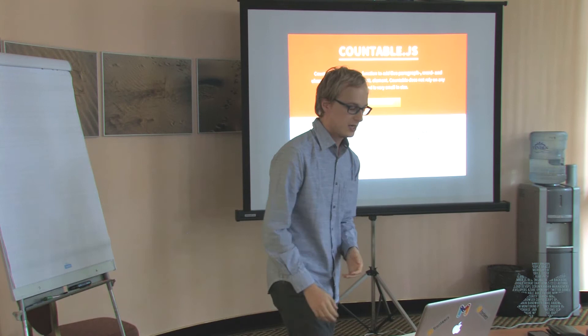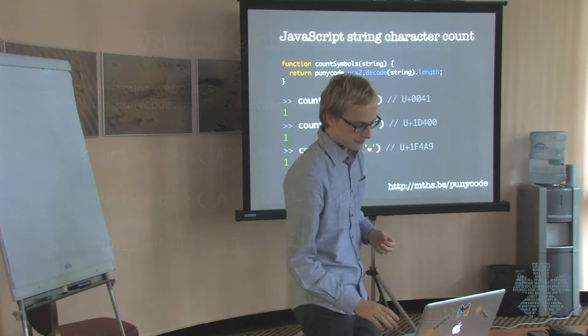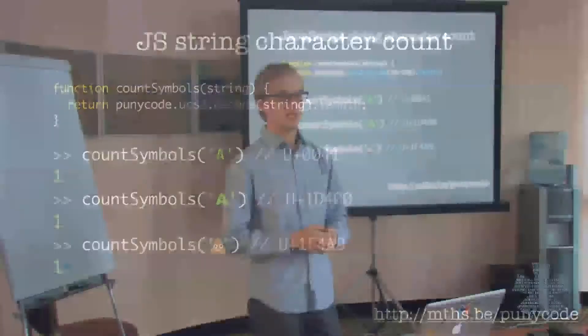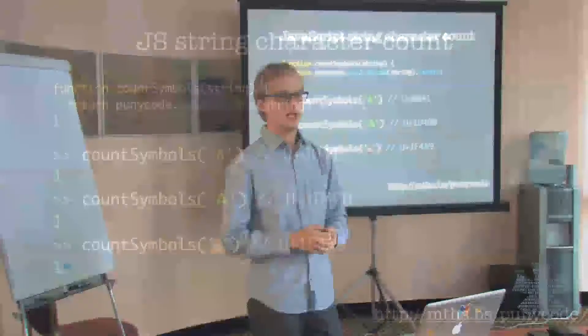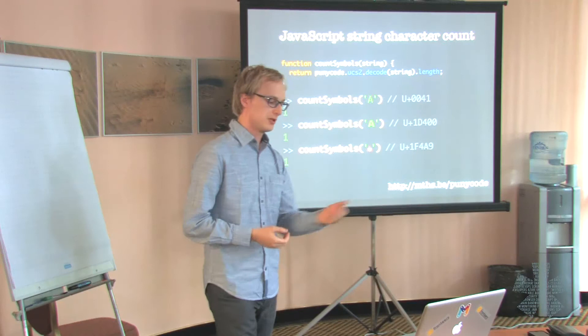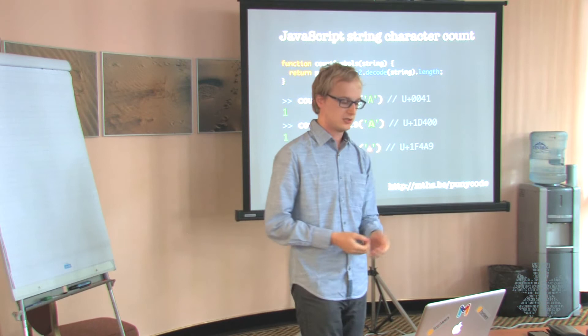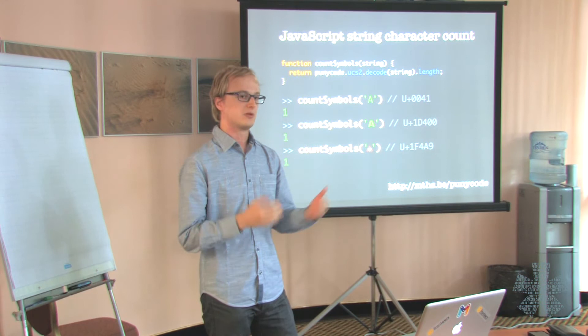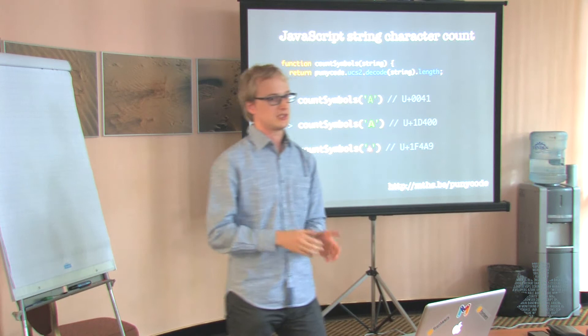So how can we accurately count the number of characters in a string? You could use the formulas I've shown you to get all the code points separately, or you could use a JavaScript library that does that for you. For example, Unicode.js is one of those libraries — it exposes utility methods such as punycode.ucs2.decode. You can pass in a string and it will return an array of code points, and if you just get the length of that array rather than the length of the string directly, you will get a more accurate result.